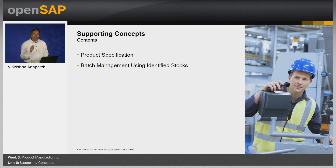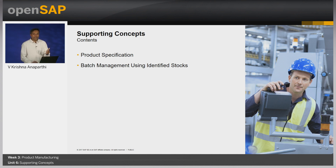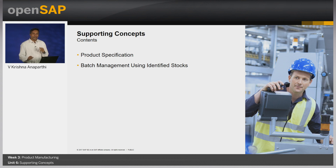In Business by Design, batch management is enabled using the object identified stock. The next concept is product specification. In the last unit, we discussed a way to define the variant for a product using product specification. In this unit, let us understand the process flow using product specification in order to build and issue goods as per the product specification.